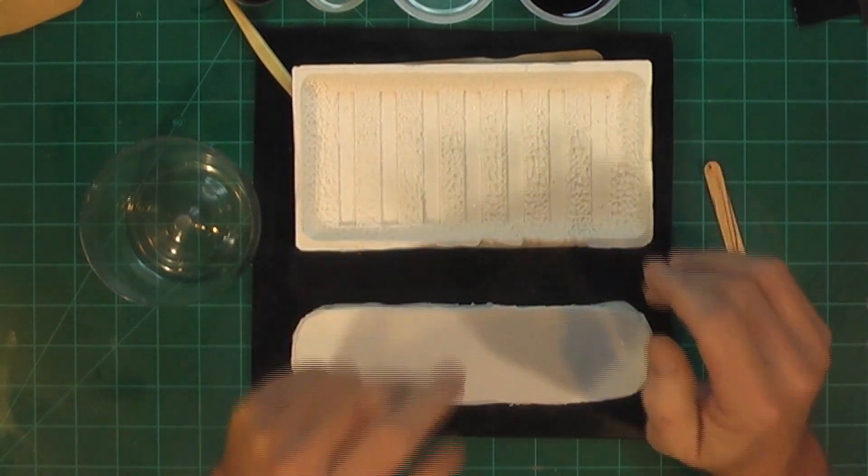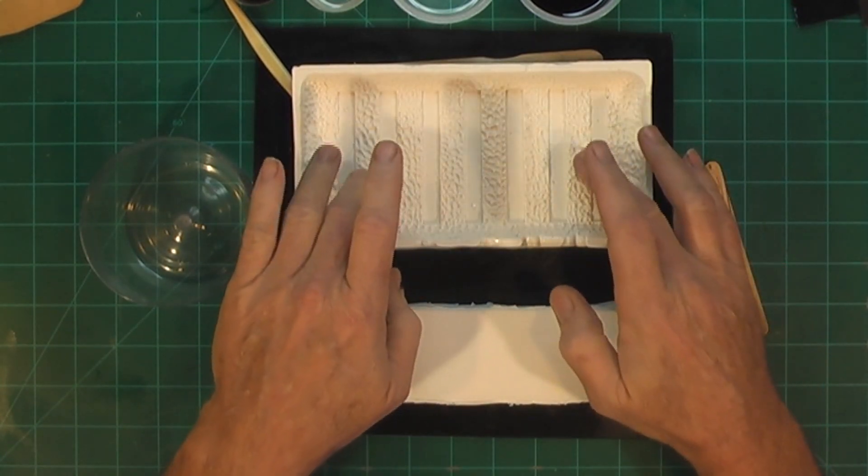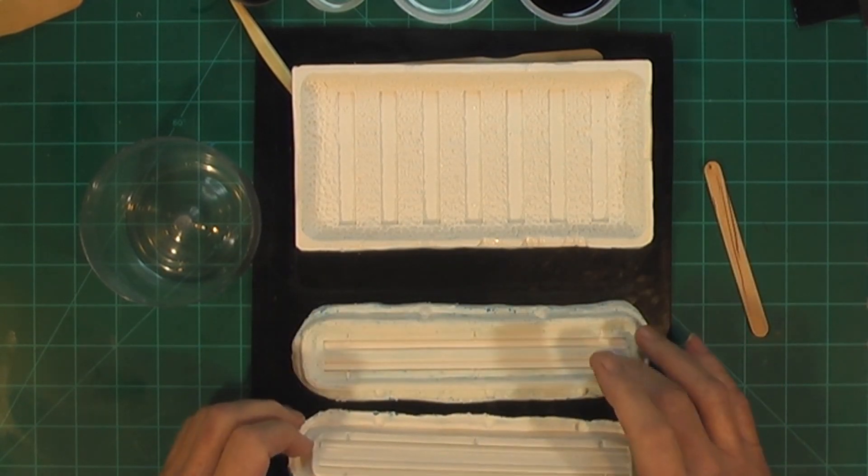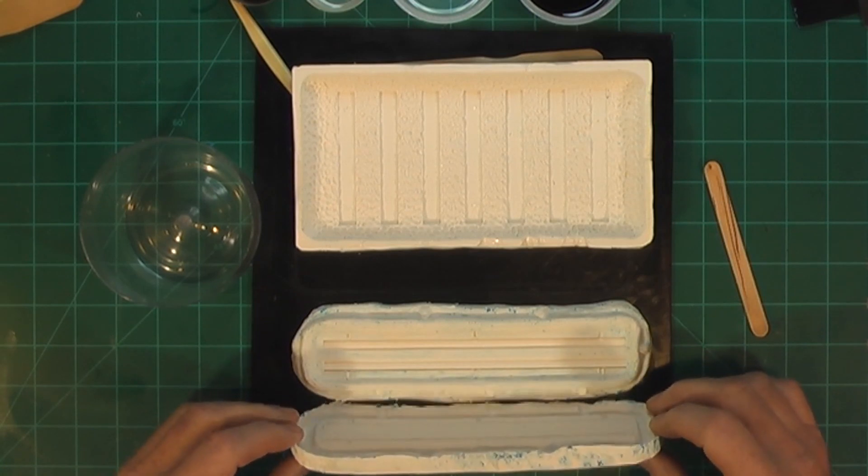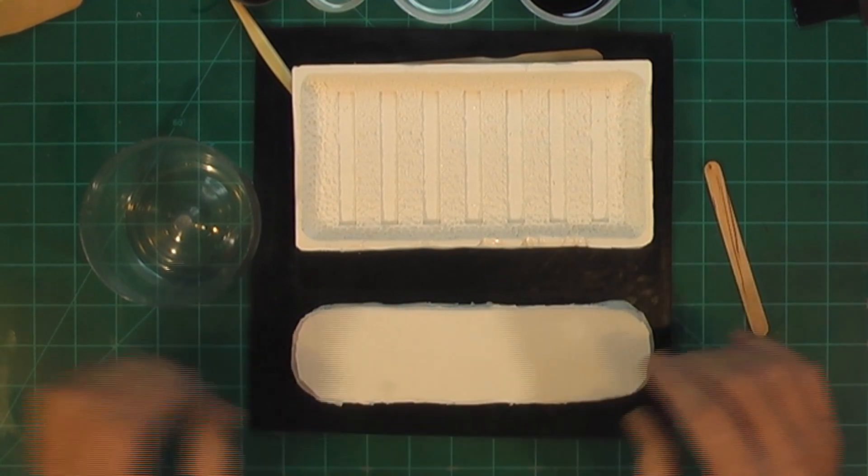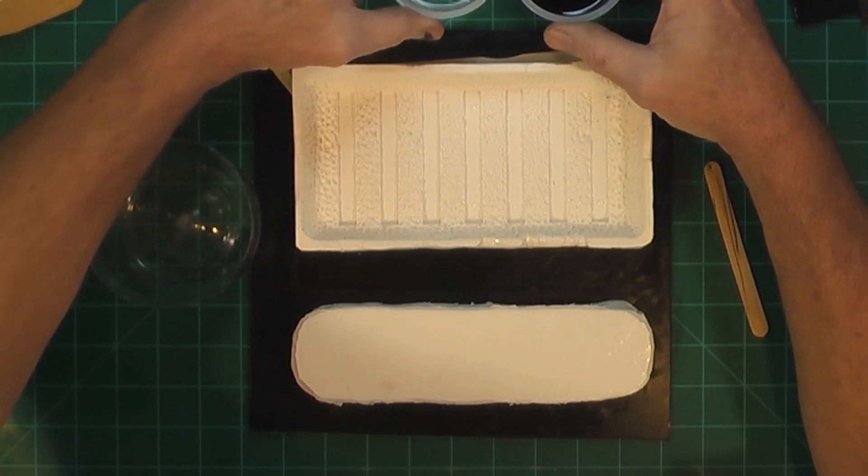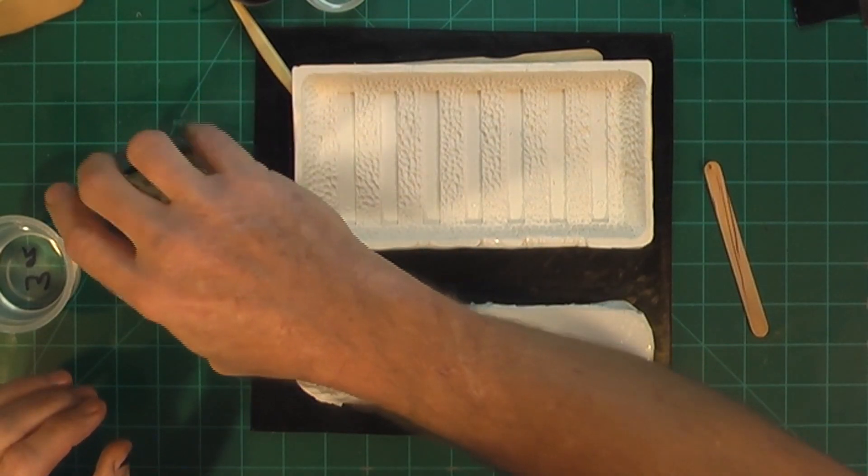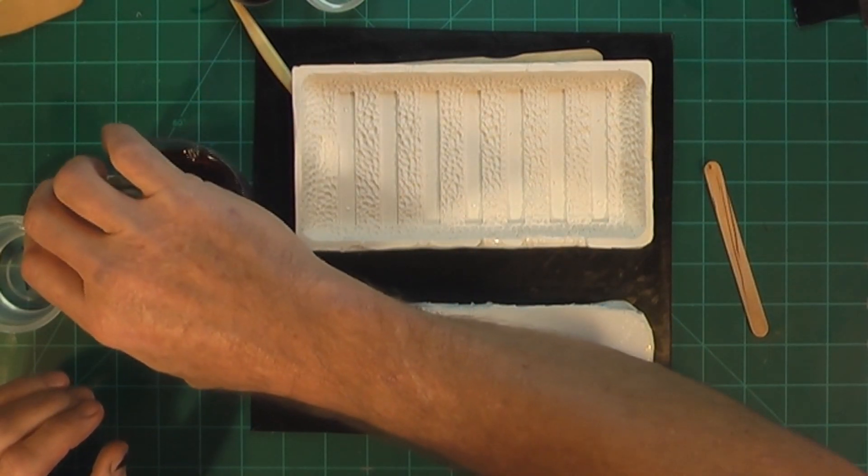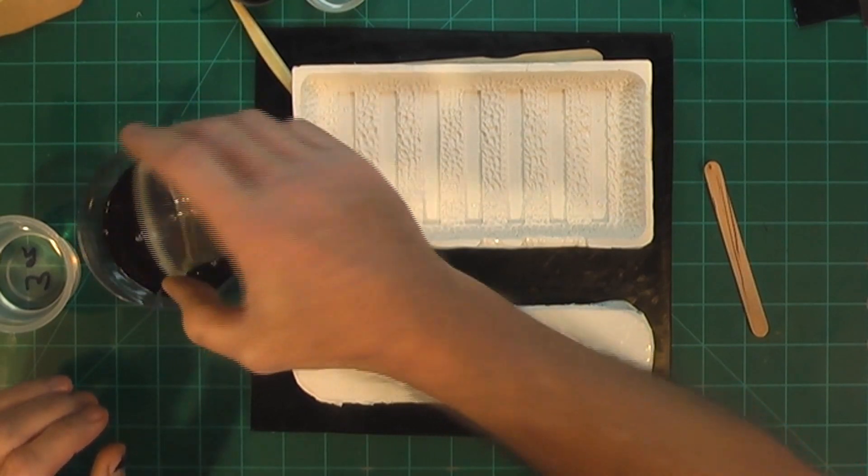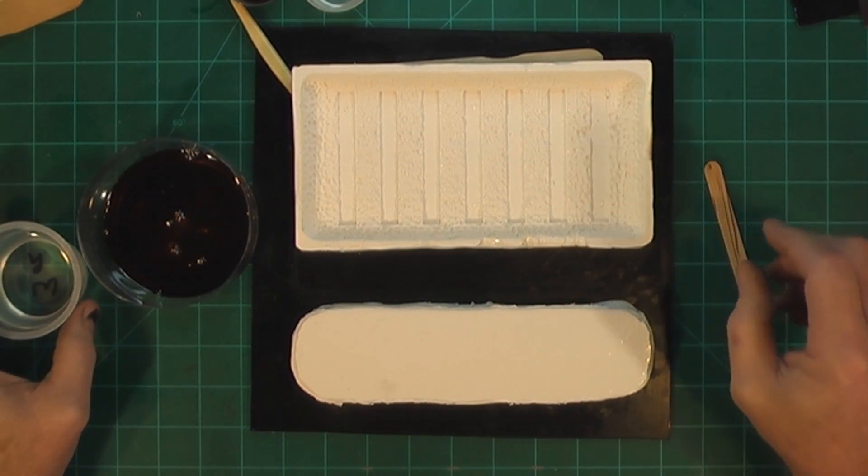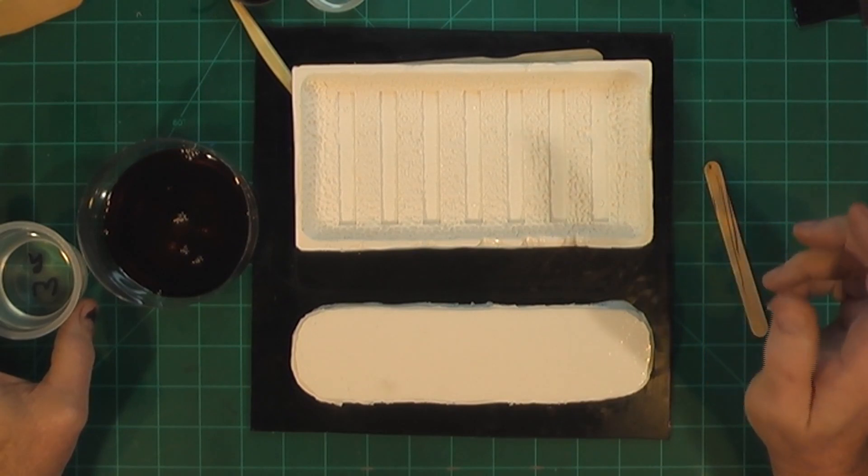We're gonna pour the rail bed base first and then I'll mix up another little batch to do the actual train rails. So let's get going. I'm gonna mix. I'll pour that in. That's about three and a half ounces and it should be about, actually I think it's six and a half ounces. So it should be three and a quarter each. So I've tried to mix just a little extra.